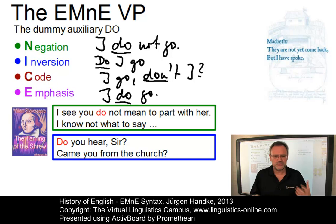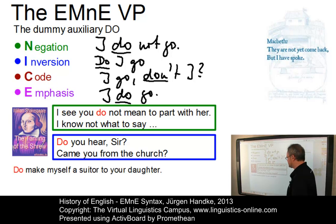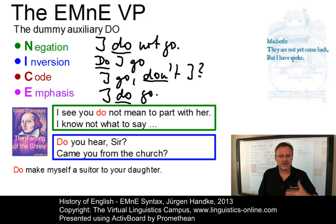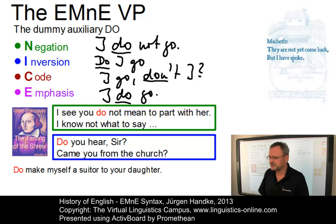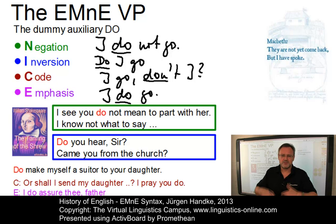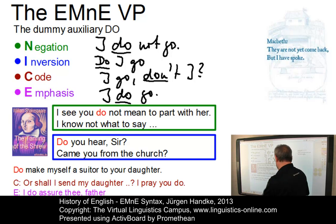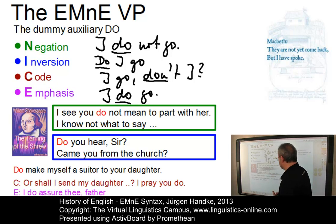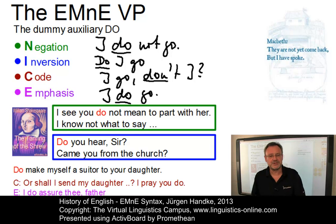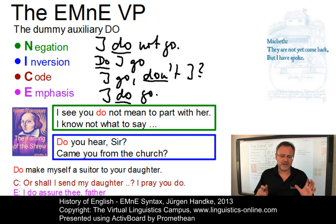Originally, do was primarily used as a causative verb, as in 'Do make myself a suitor to your daughter' — a typical causative context. Thus it is not surprising that this context constitutes the basis for the majority of examples in early modern English, mostly emphasis and code. For example, 'Shall I send my daughter? I pray you do.' And 'I do assure thee, father' — here we have code and emphasis, a use of do in line with the NICE principles. The other contexts, especially negation and inversion, were handled much less strictly; that is, they often occurred without do support.